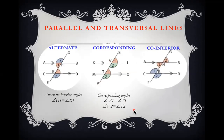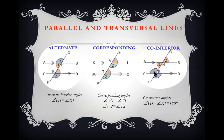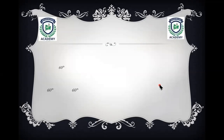Co-interior angles: co-interior simply means you are sharing something internally — like co-partner or co-sharing. Co-interior angles must also be formed by parallel lines and a transversal. In this case, angle H1 plus angle K1 must give us 180 degrees.